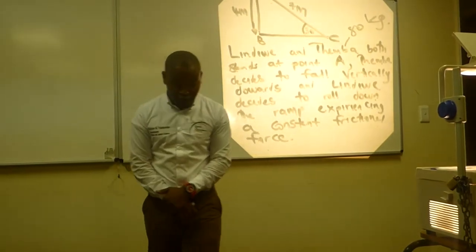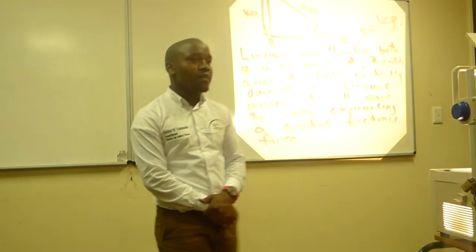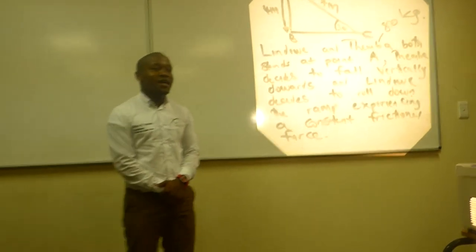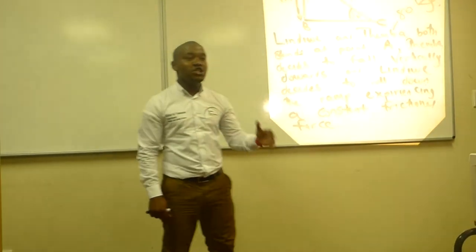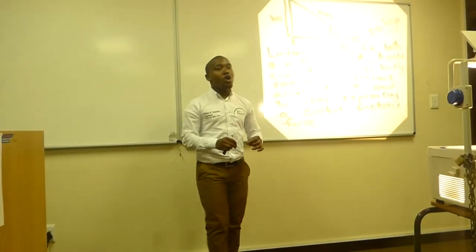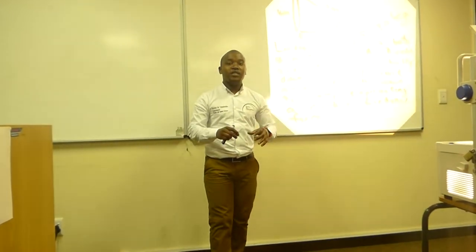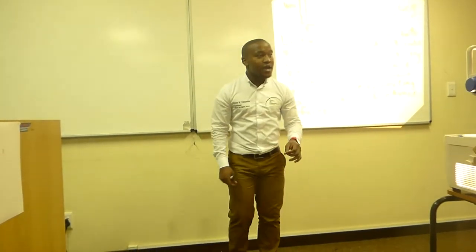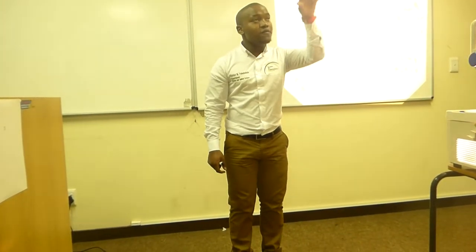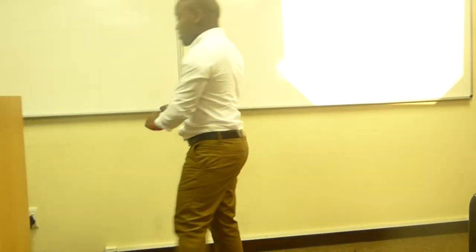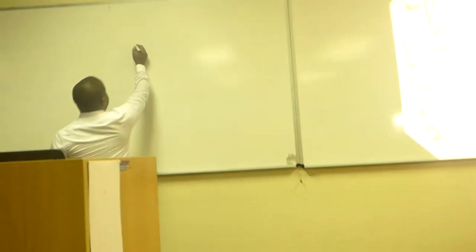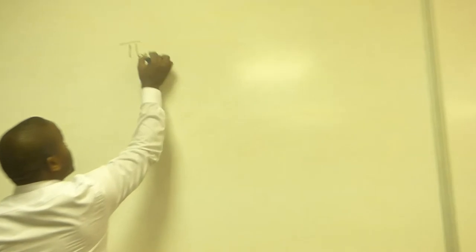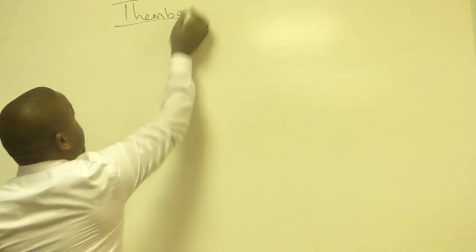Now let's go to question number two: draw the free body diagram for both Lin Duwe and Temba, showing all the forces acting on them. We are going to model Temba as an object and draw the free body diagram. Remember, Temba falls directly downward.